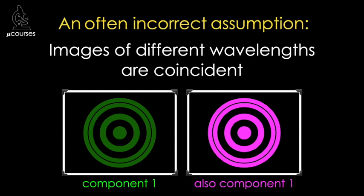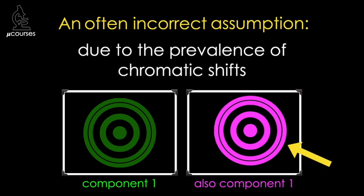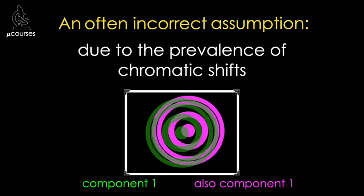Chromatic shifts result when images of different wavelengths of light are shifted relative to one another, such that the merged image of the specimen does not accurately represent the reality of the specimen. Appreciate the possible misinterpretations of imaging data that chromatic shifts may result in, particularly with co-localization measurements. The simple translation of one image relative to another, as I've shown here, is the type I will address in this microcourse, though more complicated misregistrations are possible as well.